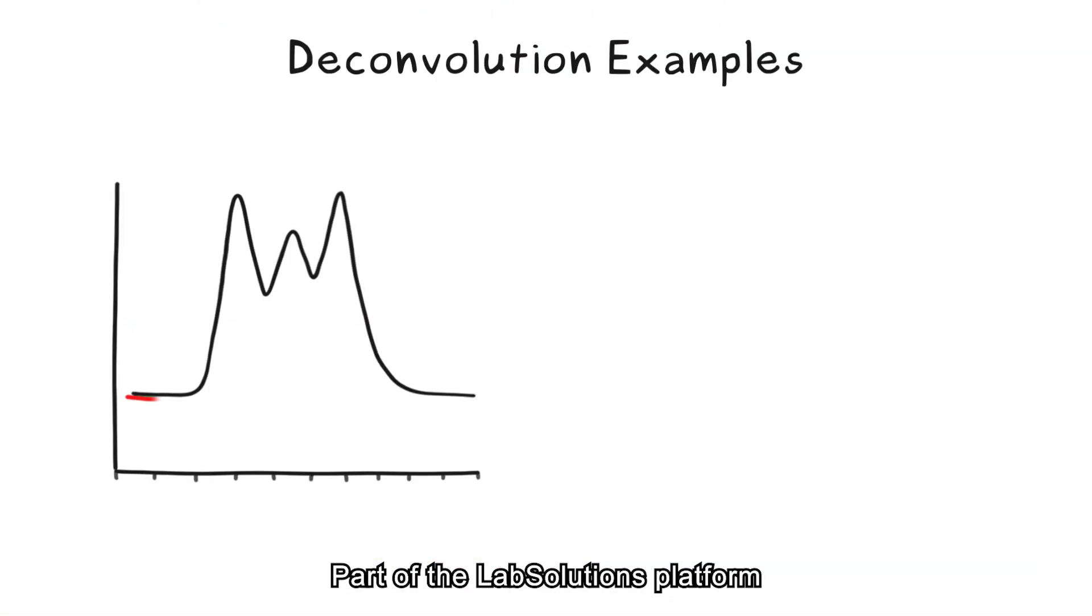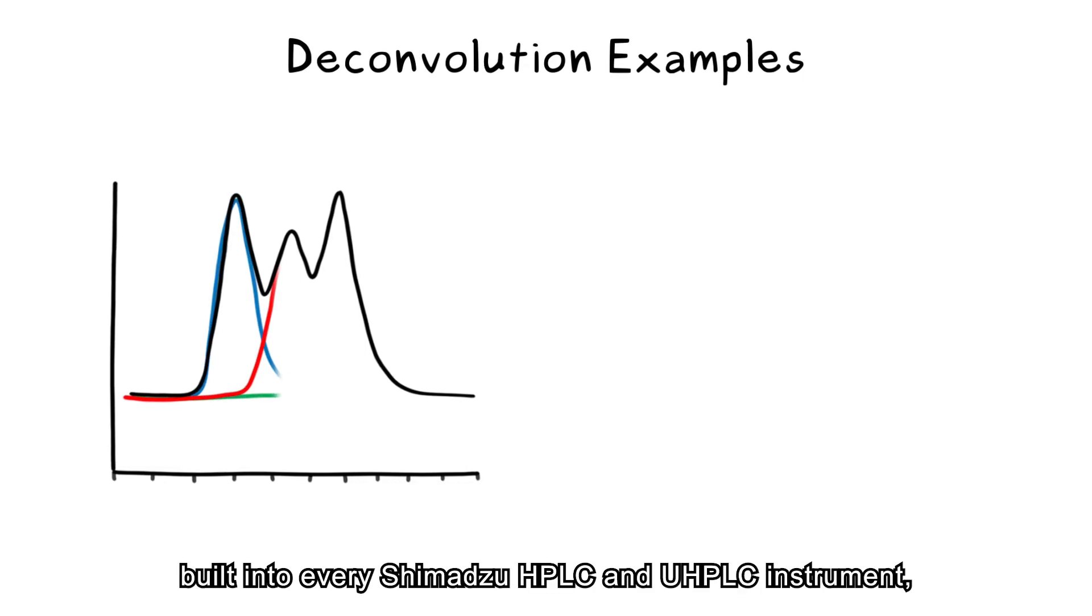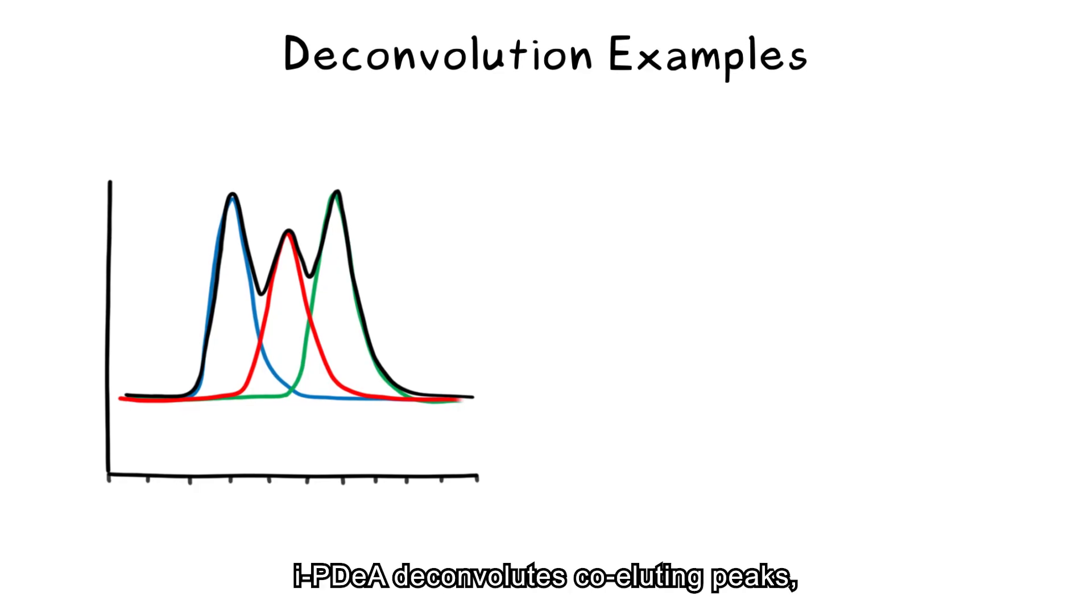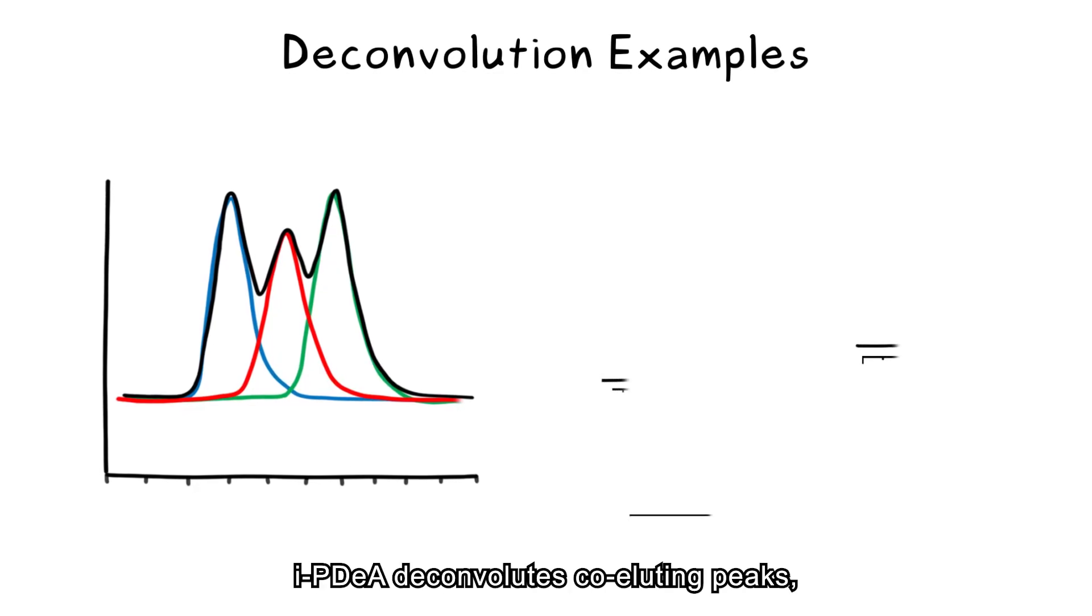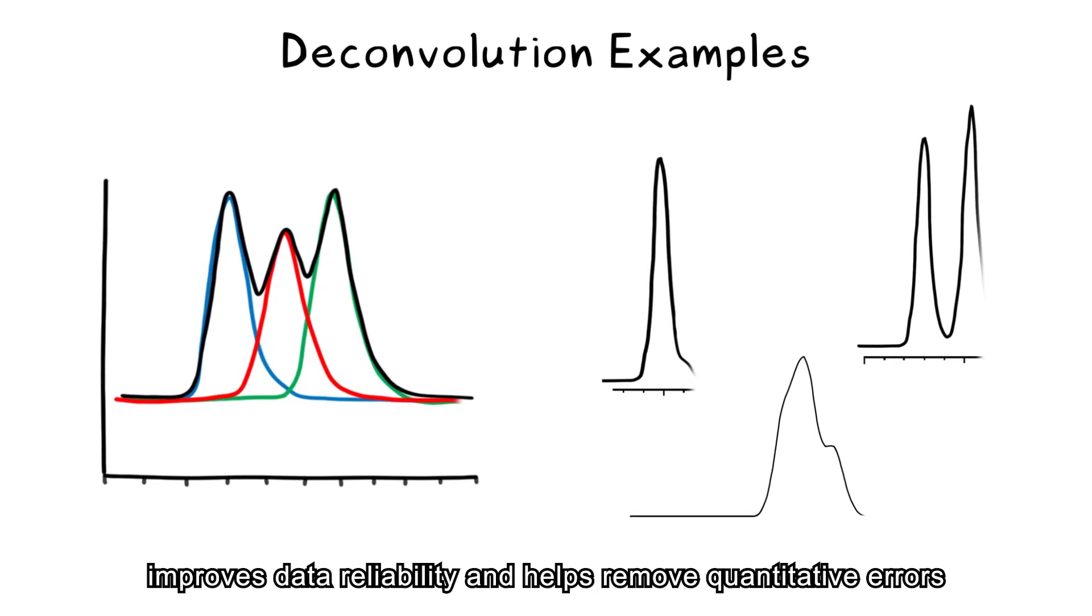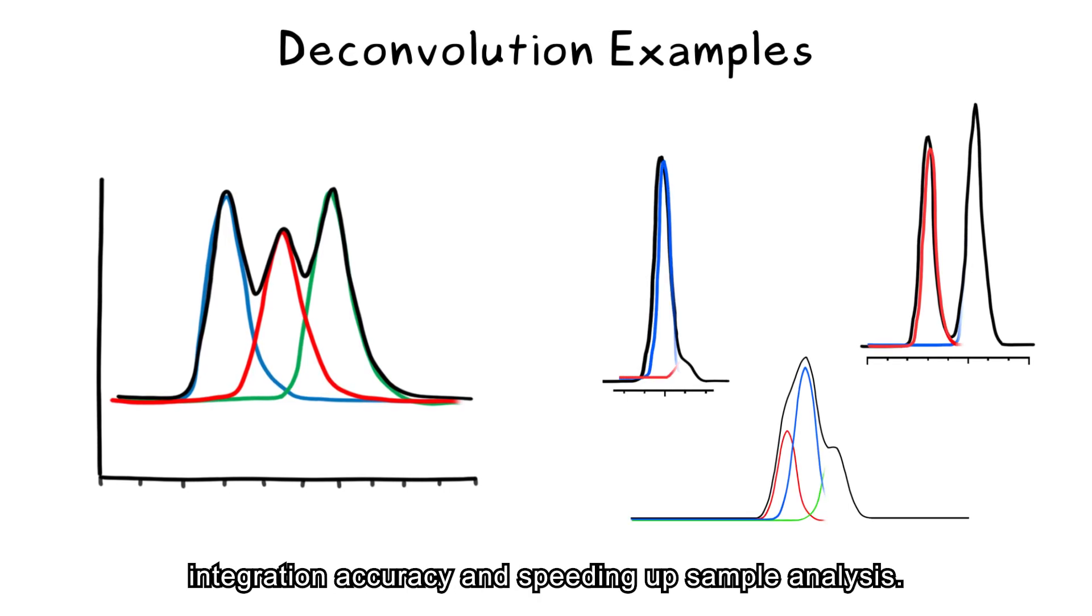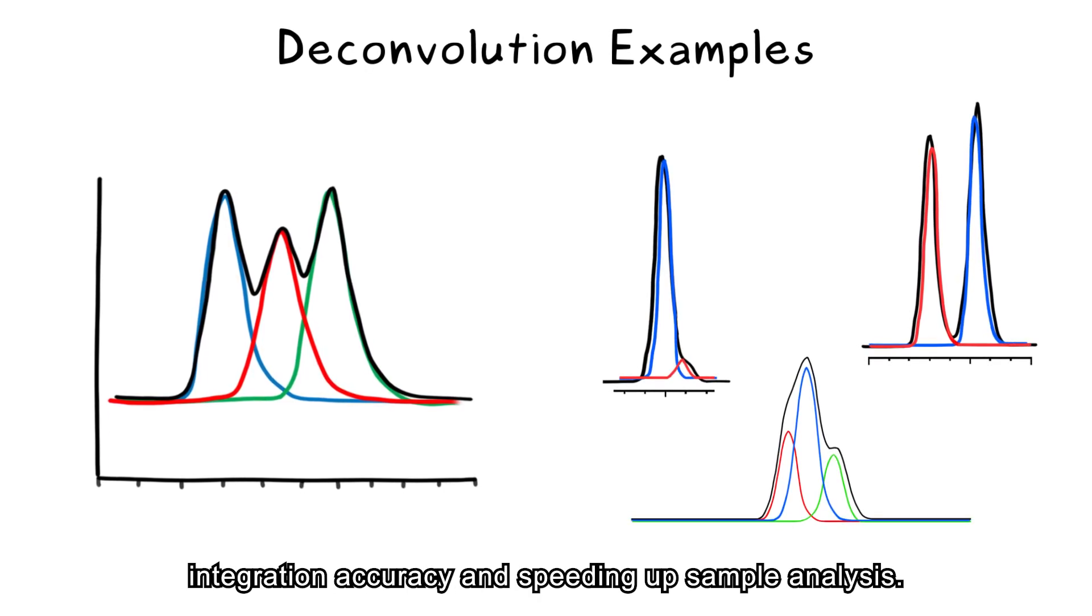Part of the LabSolutions platform built into every Shimadzu HPLC and UHPLC instrument, i-PDeA deconvolutes co-eluting peaks, improves data reliability and helps remove quantitative errors while also increasing integration accuracy and speeding up sample analysis.